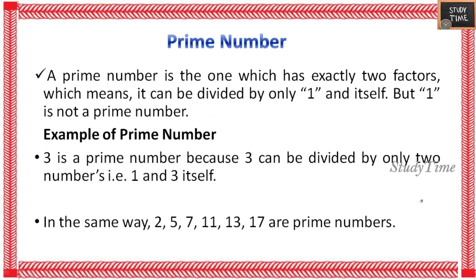Next, prime numbers. A prime number is one which has exactly two factors, which means it can be divided by only 1 and itself. Note that 1 is not a prime number — 1 is neither prime nor composite. 3 is a prime number because 3 can be divided by only two numbers: 1 and itself. Similarly, 2, 3, 5, 7, 11, 13, and 17 are prime numbers.